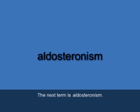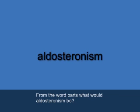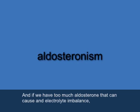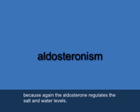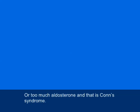The next term is aldosteronism (A-L-D-O-S-T-E-R-O-N-I-S-M). Like other terms ending in '-ism,' this refers to an excessive secretion — specifically, excessive secretion of aldosterone. If there is too much aldosterone, that can cause an electrolyte imbalance, because aldosterone regulates salt and water levels.